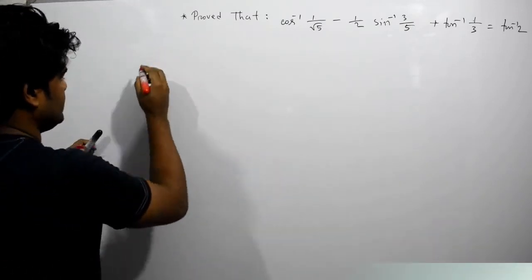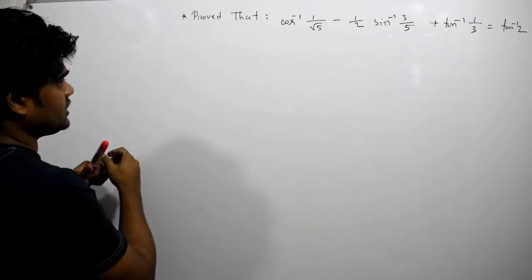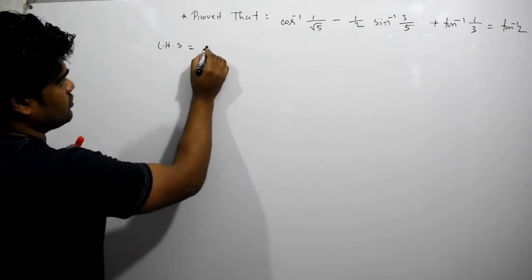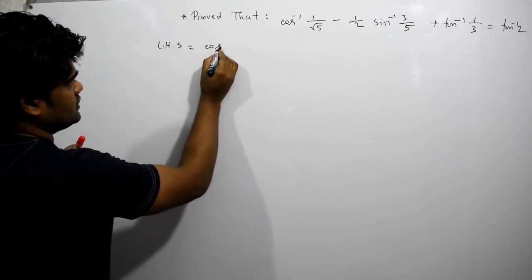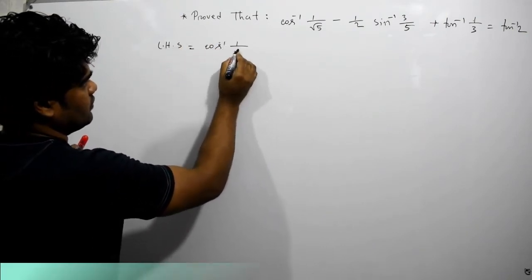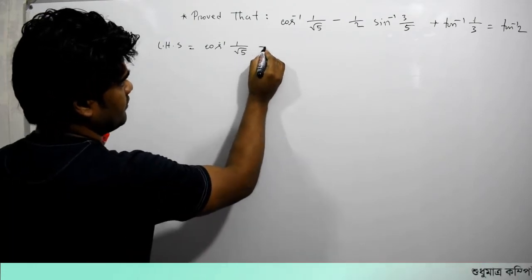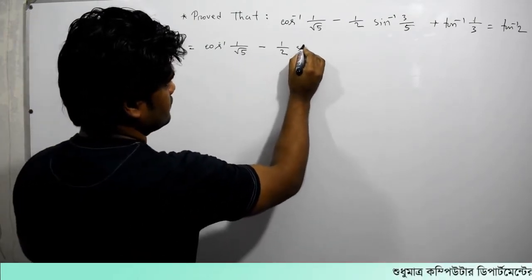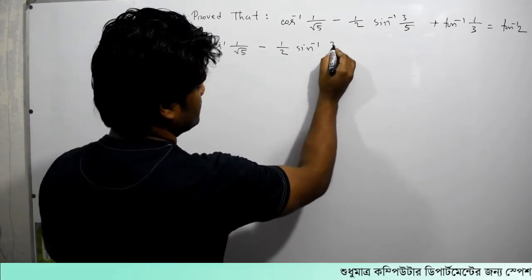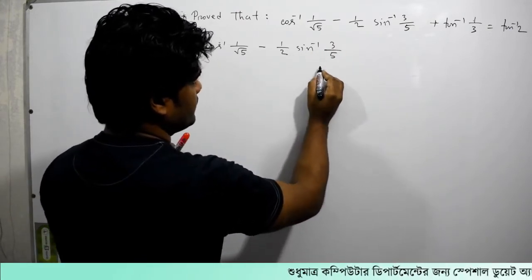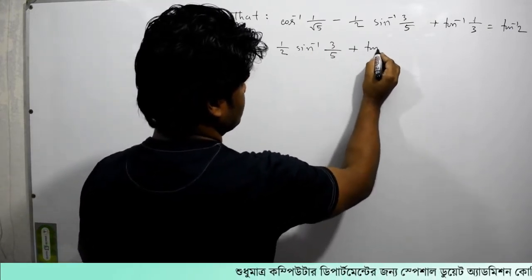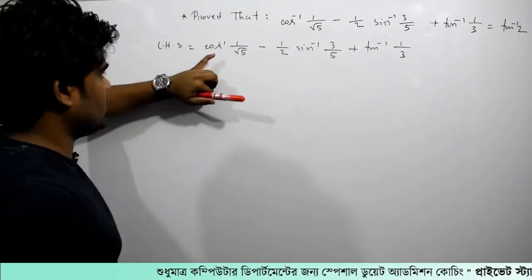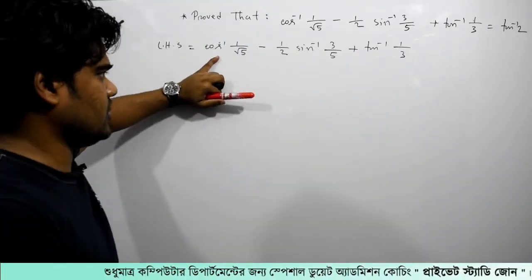We will start with the left-hand side. We have cos inverse of 1 by root 5, minus half sin inverse of 3 by 5, plus tan inverse of 1 by 3. We will convert this.